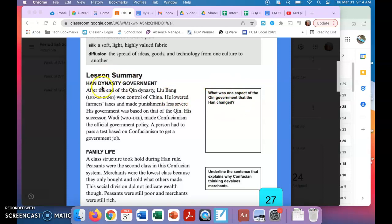So the Han Dynasty government: after the end of the Chin Dynasty, Liu Bang won control of China. He lowered farmers' taxes and made punishment less severe. His government was based on that of the Chin. His successor Wu Di made Confucianism the official government policy. A person had to pass a test based on Confucianism to get a government job.